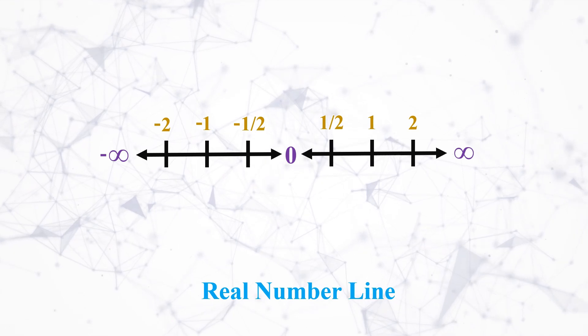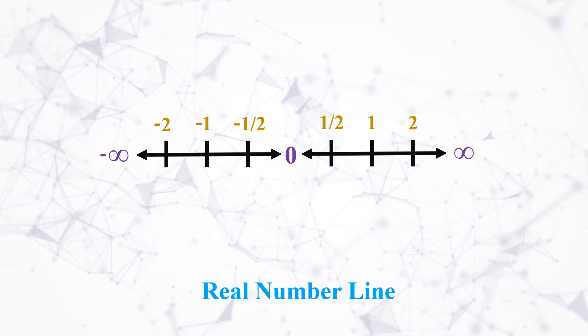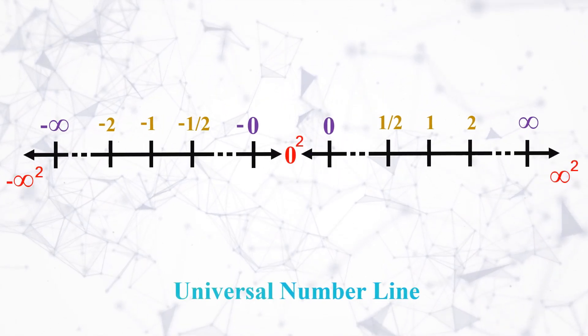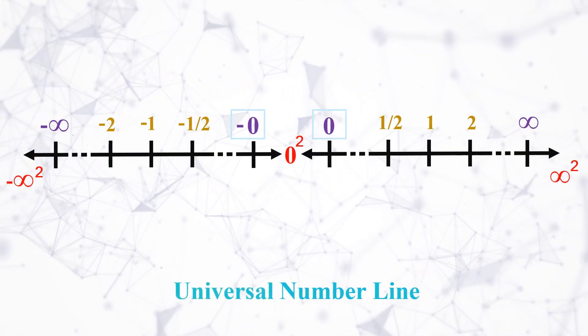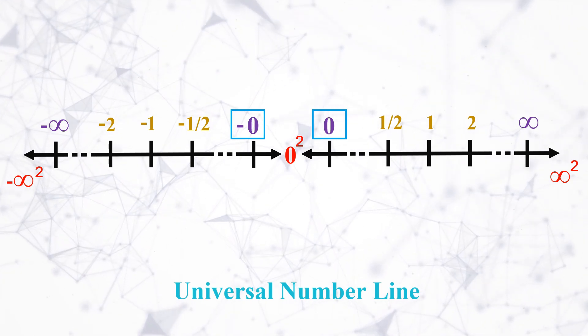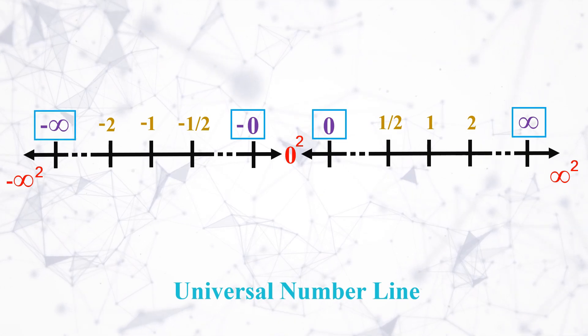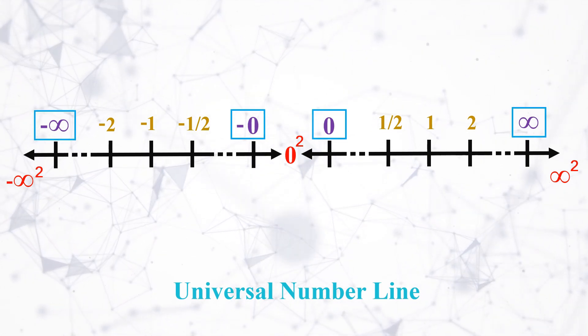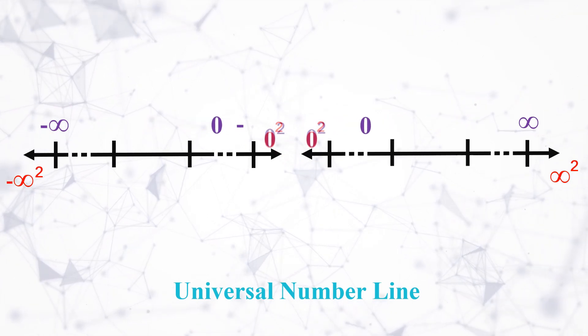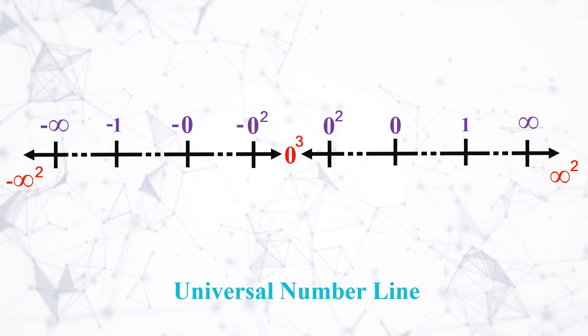Just like real number lines with a common center zero have the same magnitude on both sides, in a similar fashion we also have a universal number line with extended numbers on the real number line. Zero is also part of the number line which is both positive and negative, with its multiplicative inverse as positive and negative infinity respectively, and here the connecting point is zero square.